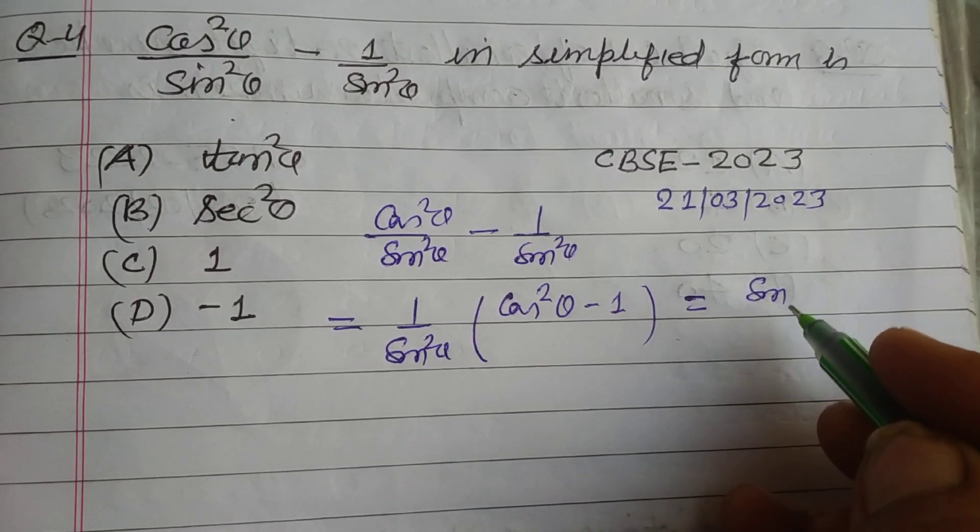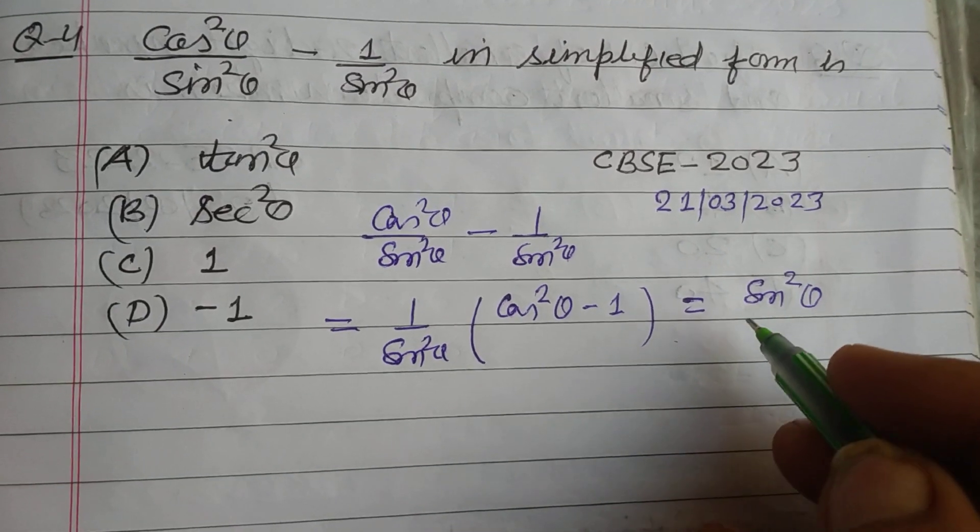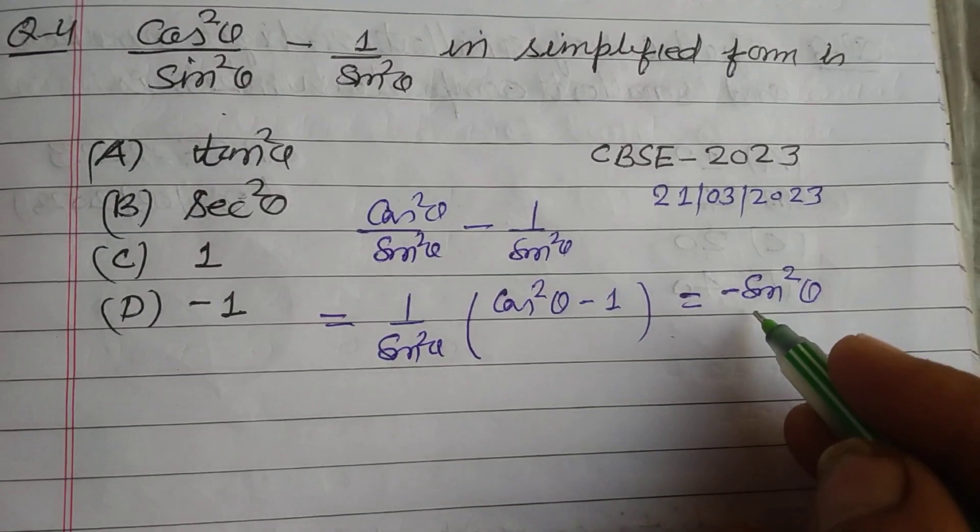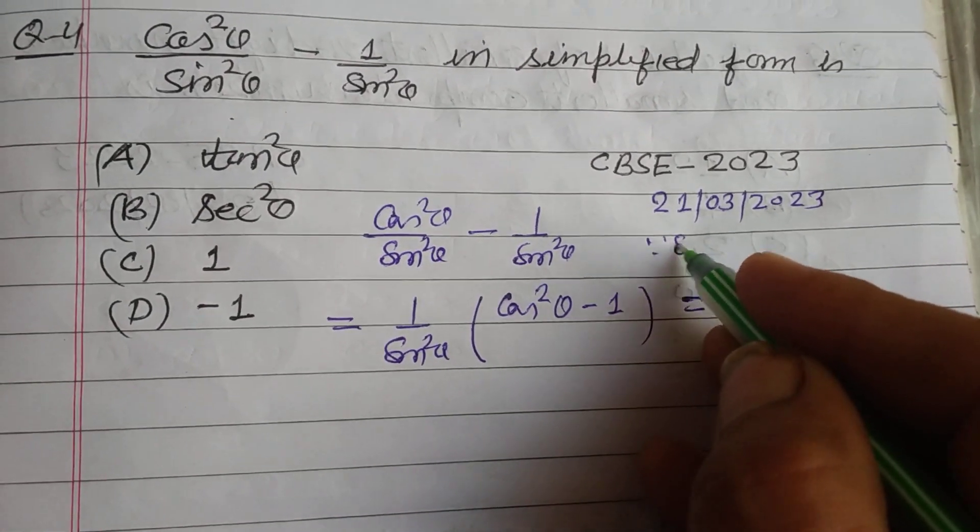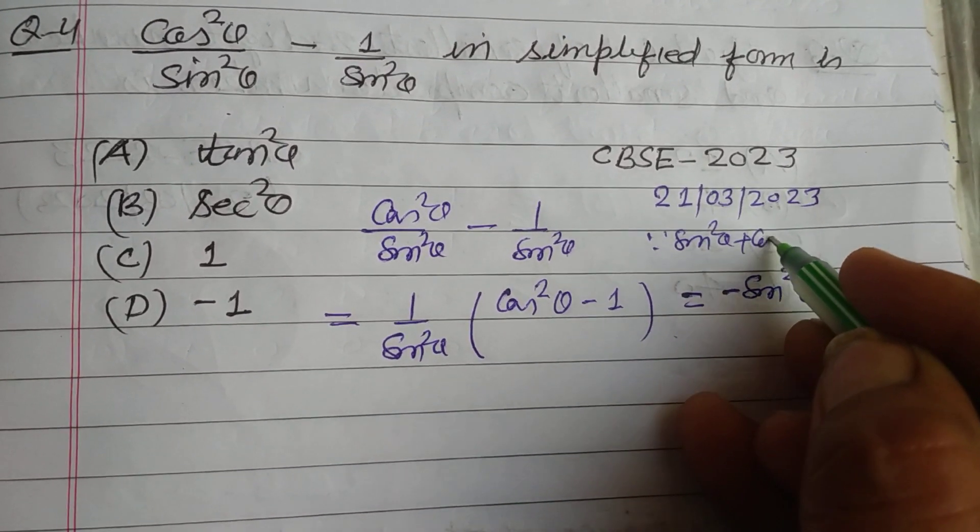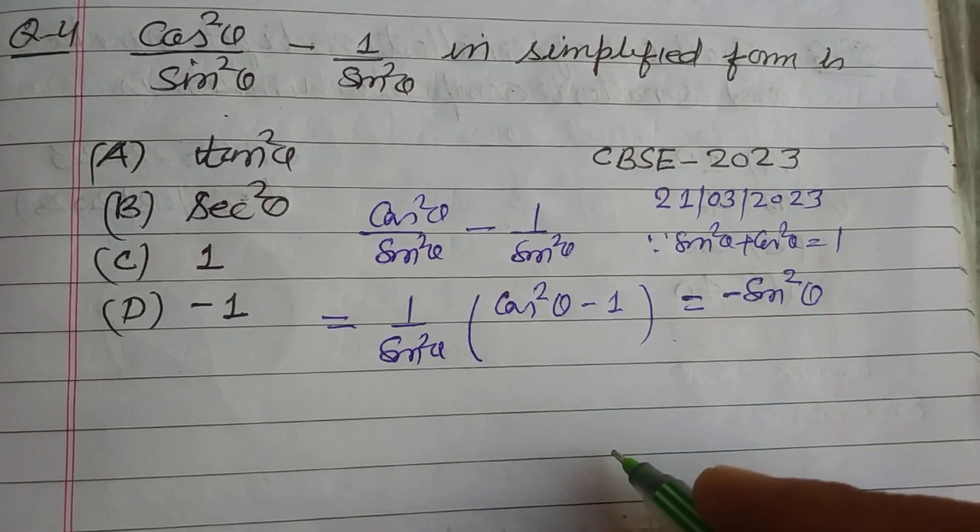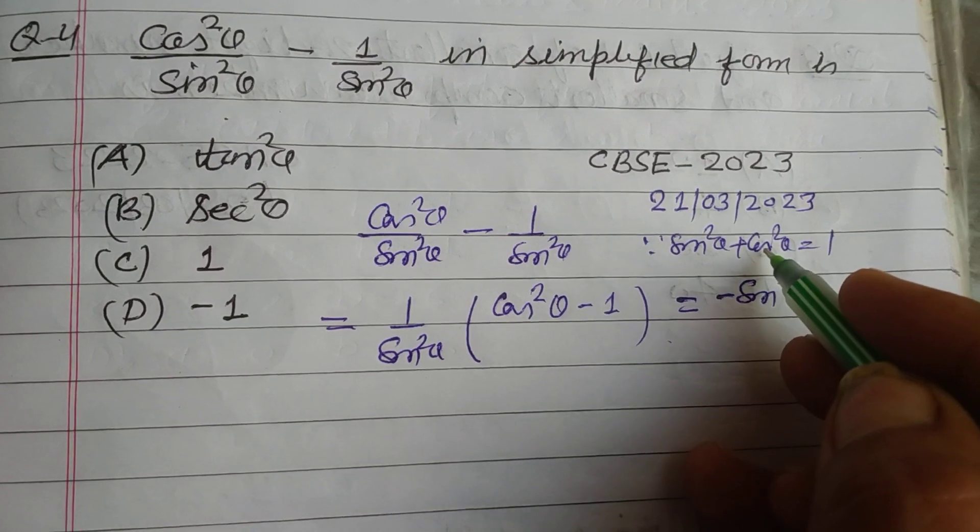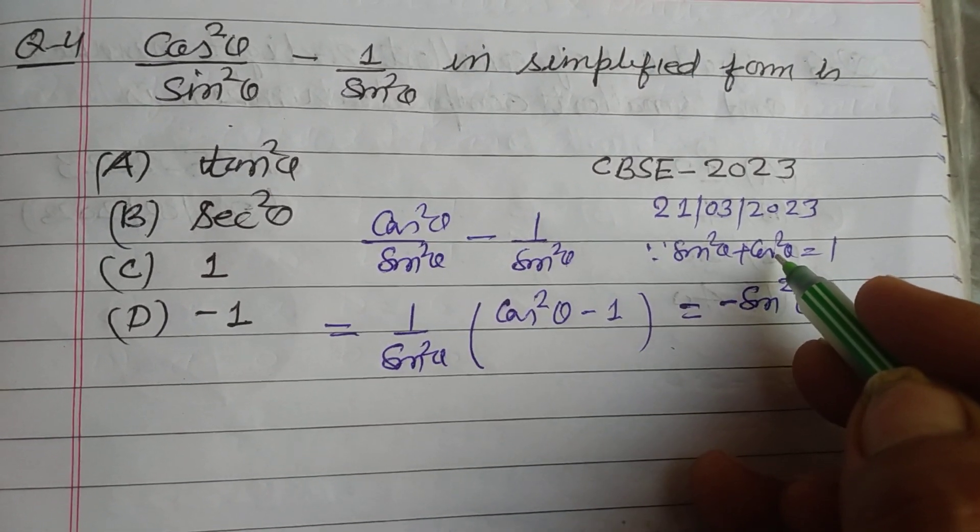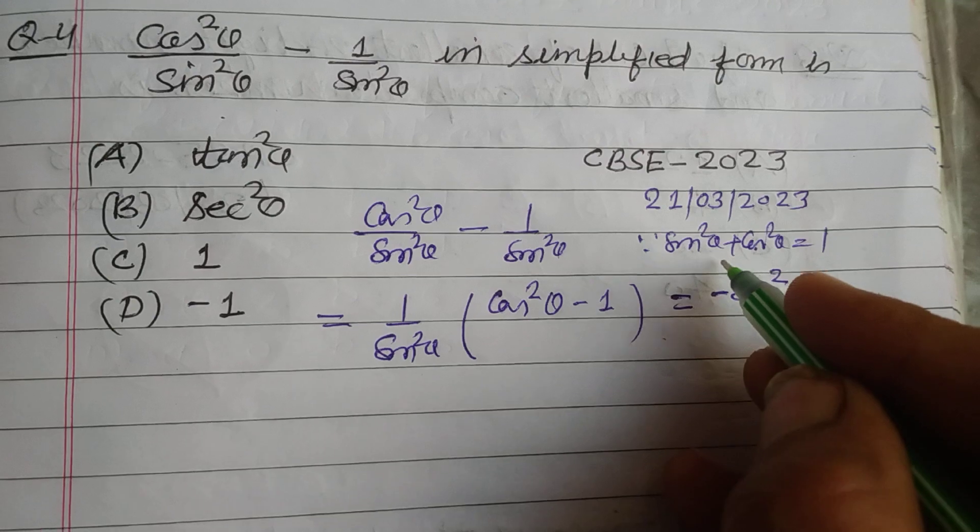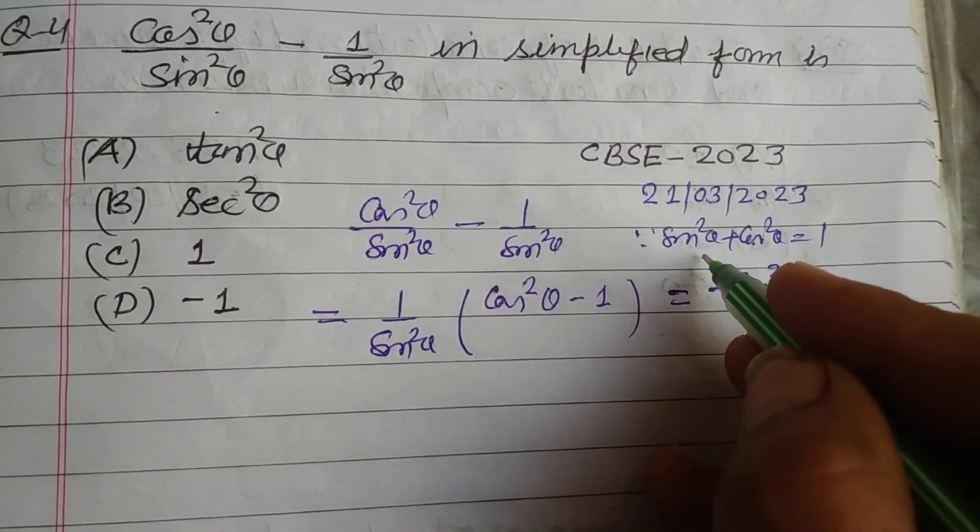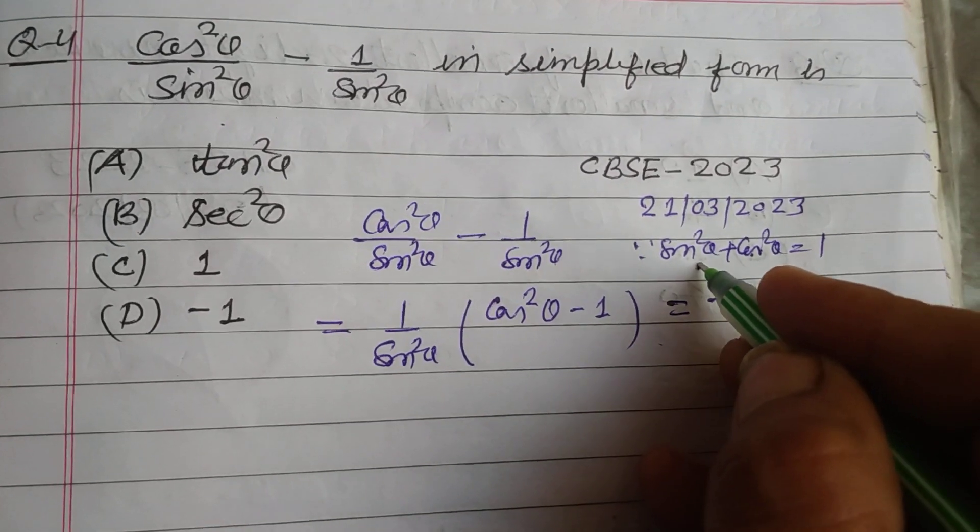This is sine square theta in negative, okay? Because you know that sine square theta plus cos square theta equal to one. This is the identity. So when you bring sine square theta in towards cos square theta and bring the sine square theta to the right side,